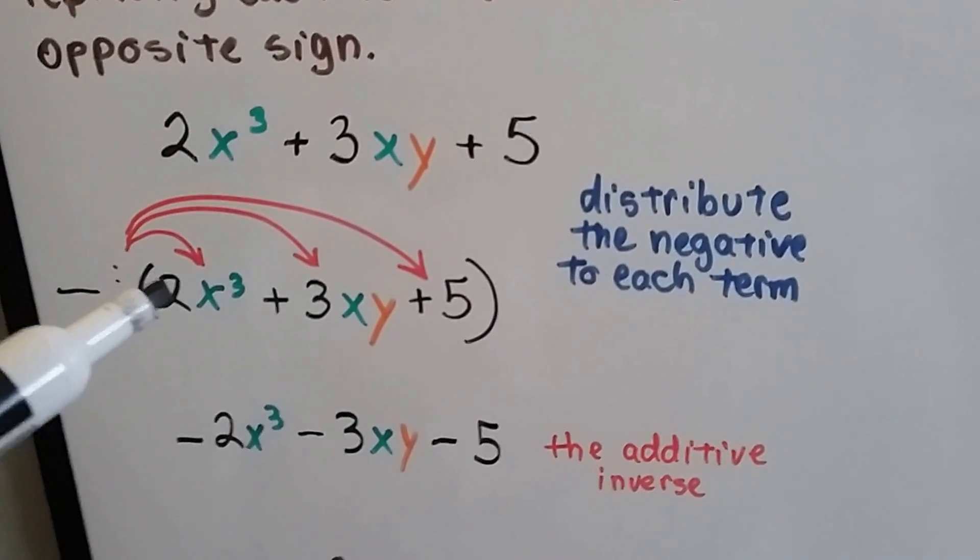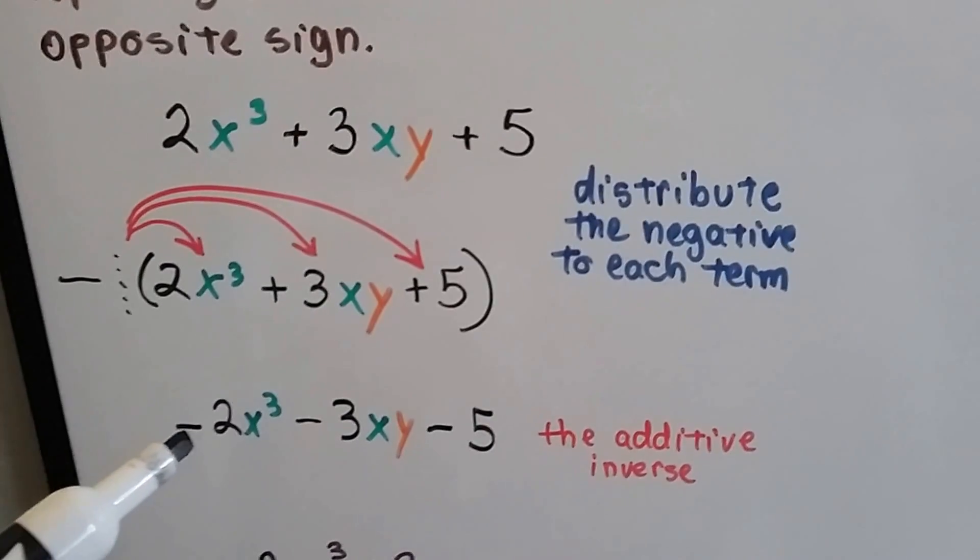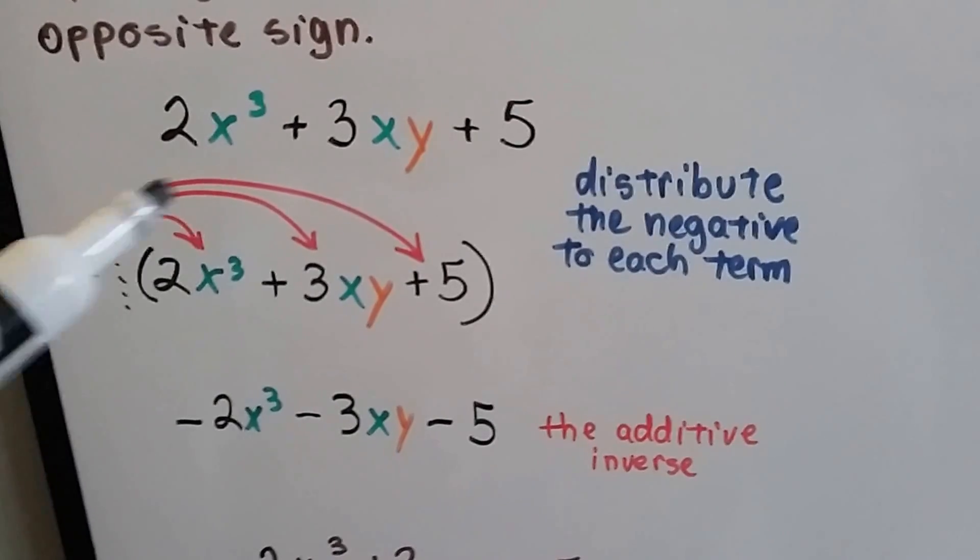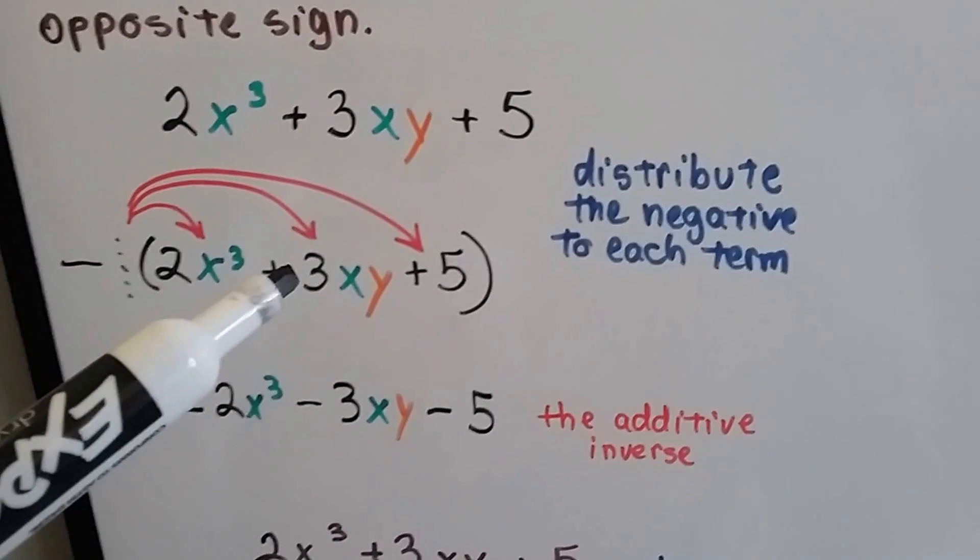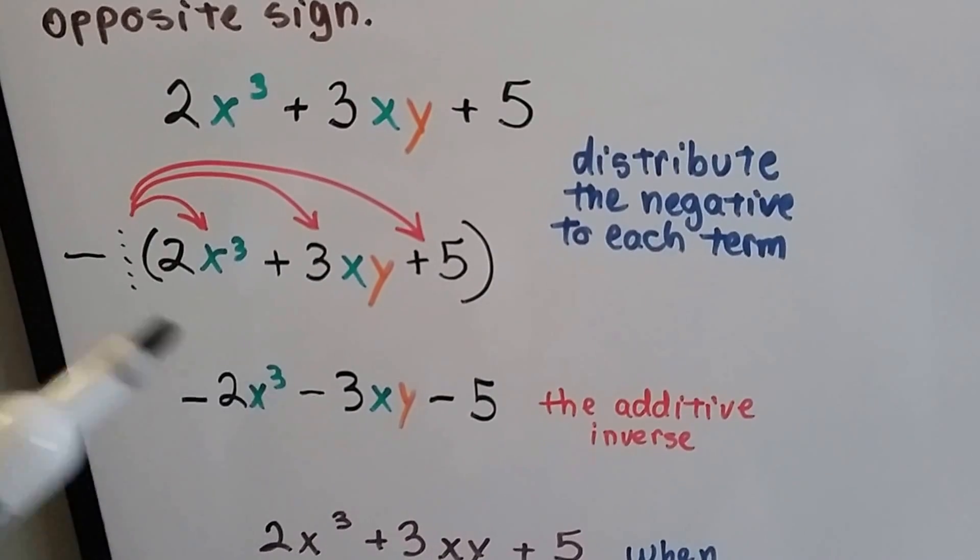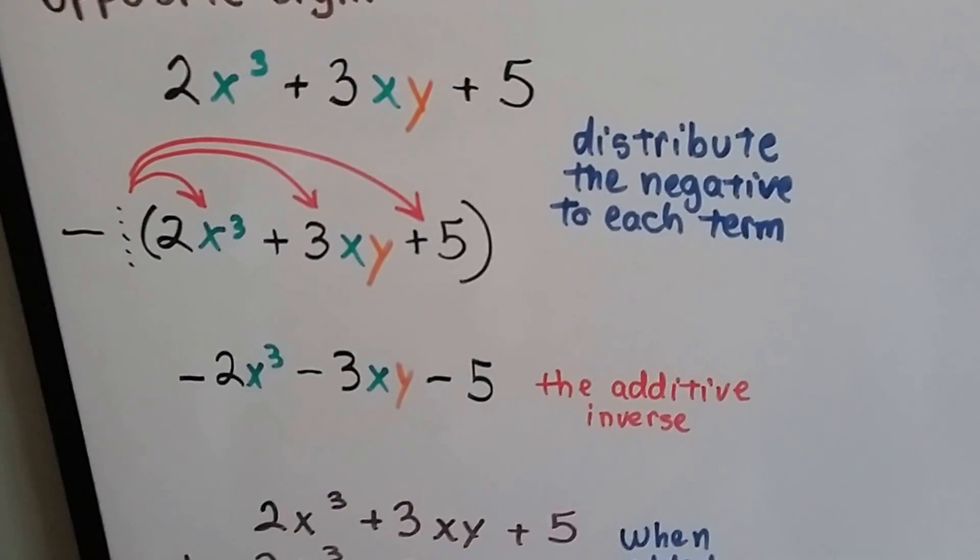This negative 1 times 2x to the third becomes negative 2x to the third. Negative 1 times positive 3xy becomes negative 3xy. Negative 1 times positive 5 becomes negative 5.